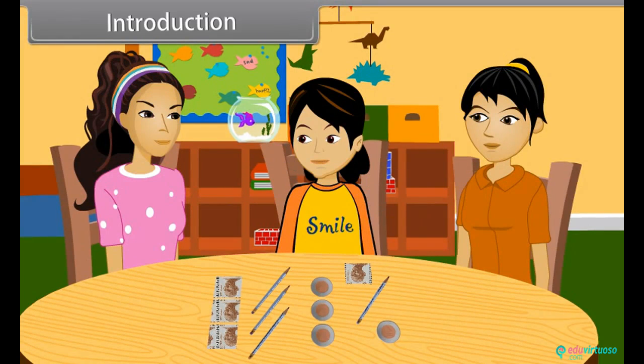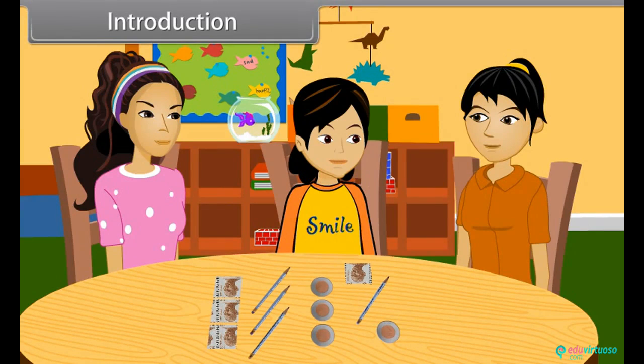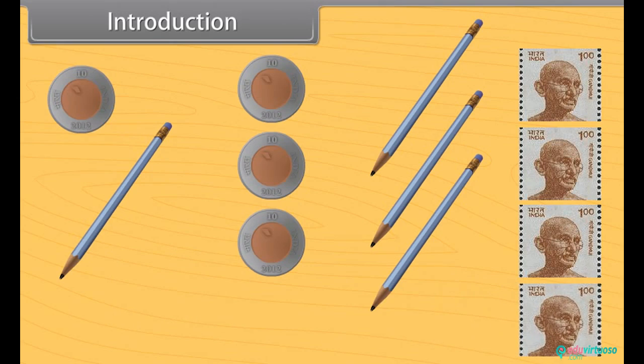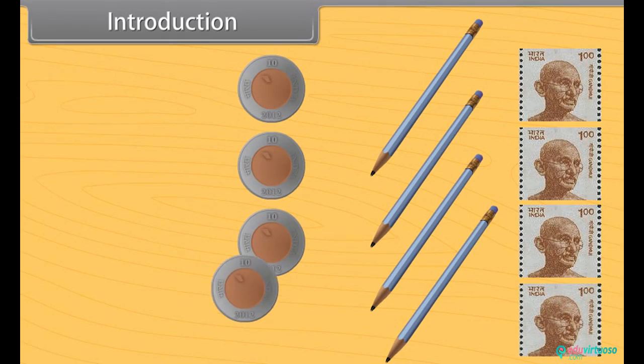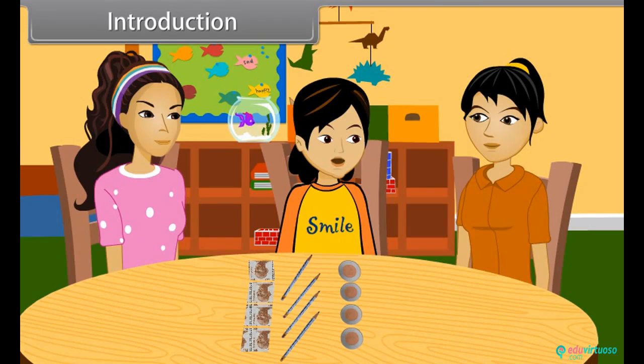Introduction. Priya, can you tell which of these things belong to which set? Yes, it is so simple. Stamp will go in the set of stamps. Pencil belongs to the set of pencils. And this coin belongs to the set of coins. D, what is a set?